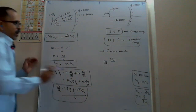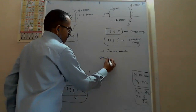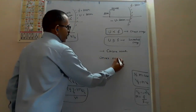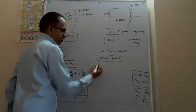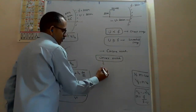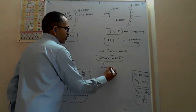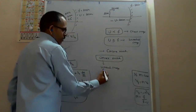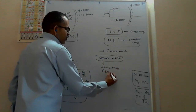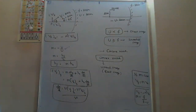Application number two: convex mirror is used as the rear-view mirror in bikes and cars. Why? Because convex mirrors always form a virtual image, and a virtual image is always an erect image.